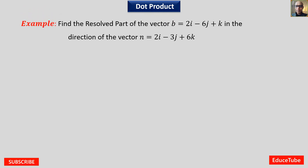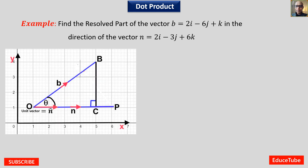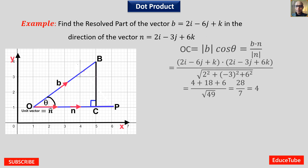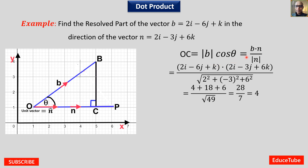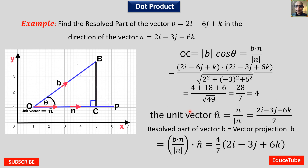Here I have taken another example: find the resolved part of vector b in the direction of vector n. Same figure, same way — we find OC equals b cos theta using the formula b dot n divided by magnitude of n. Putting in the values, we get magnitude of OC equals 4. For getting the vector projection or resolved part of vector b, we multiply this scalar projection by the unit vector. This value is already 4, and multiplying by the unit vector gives the result in this form.